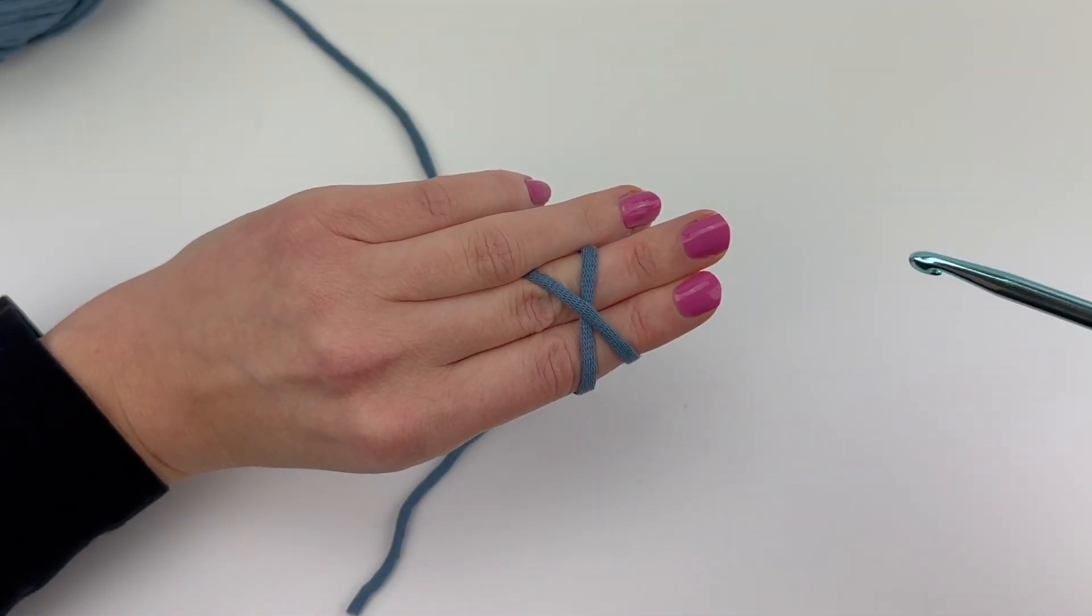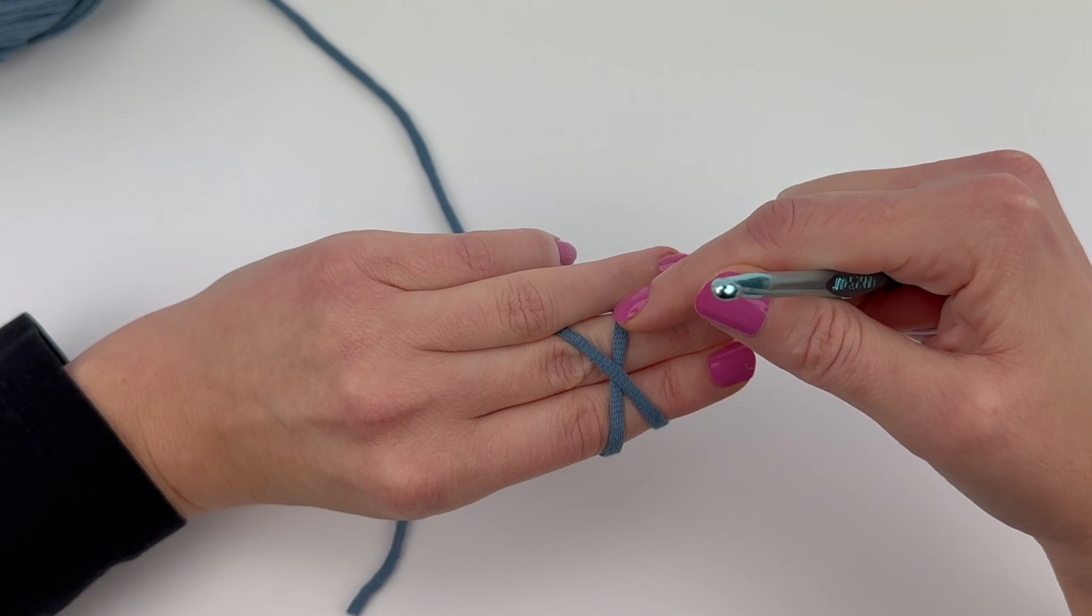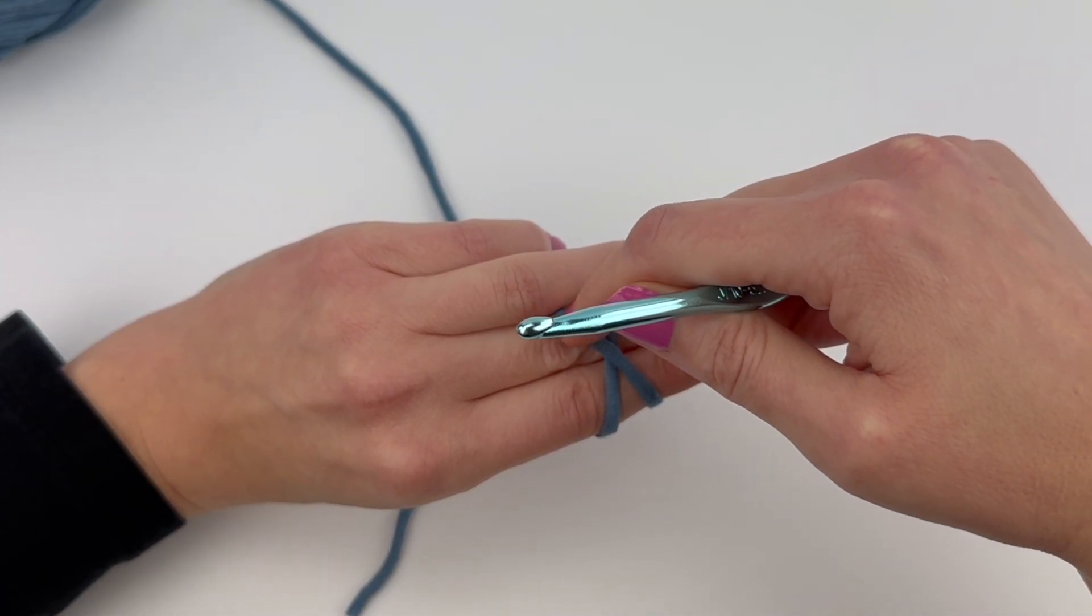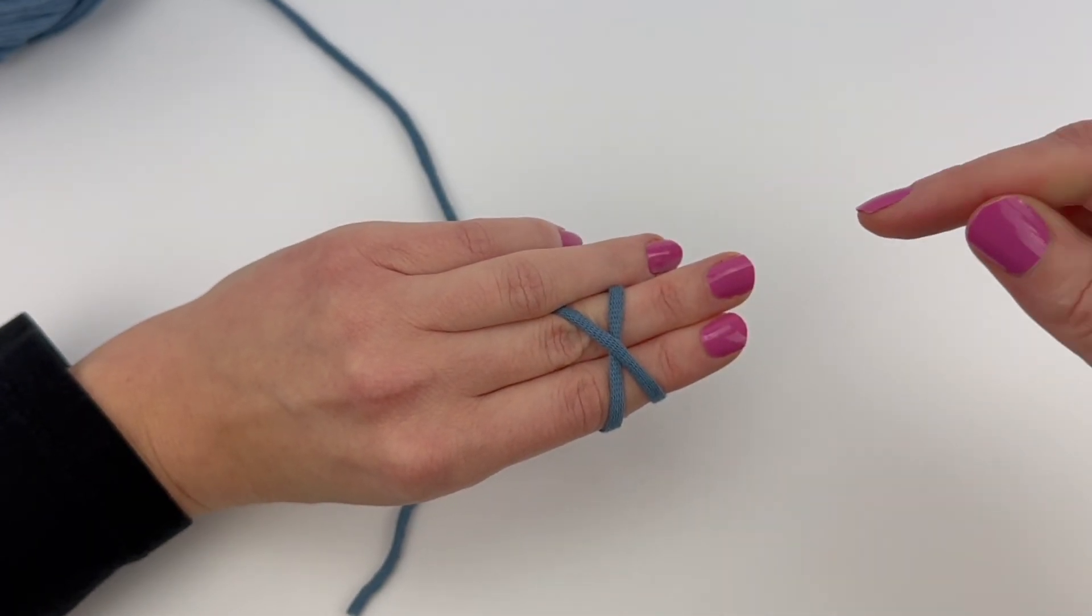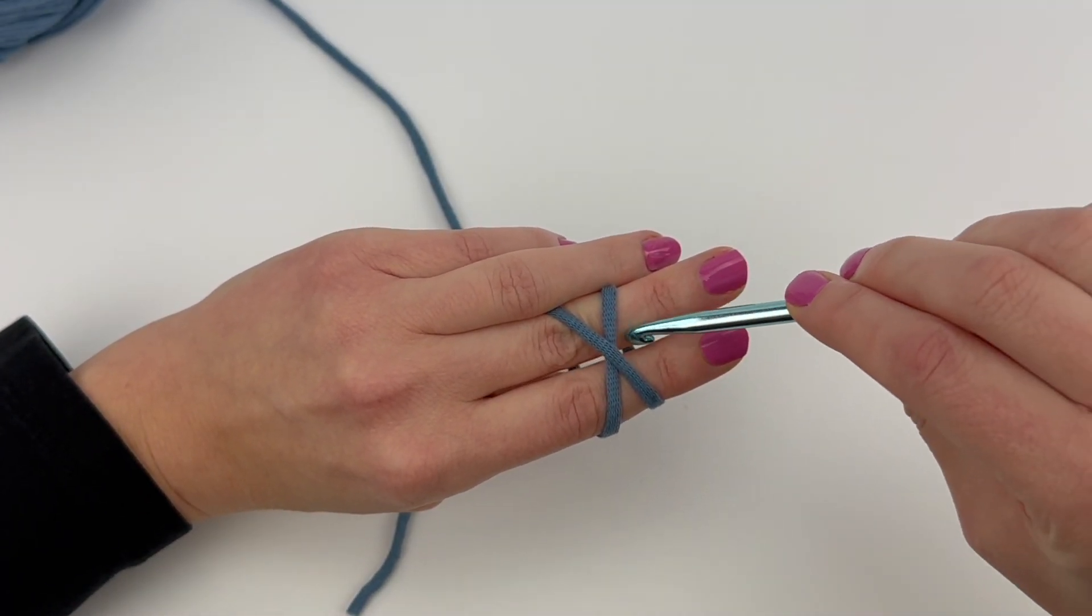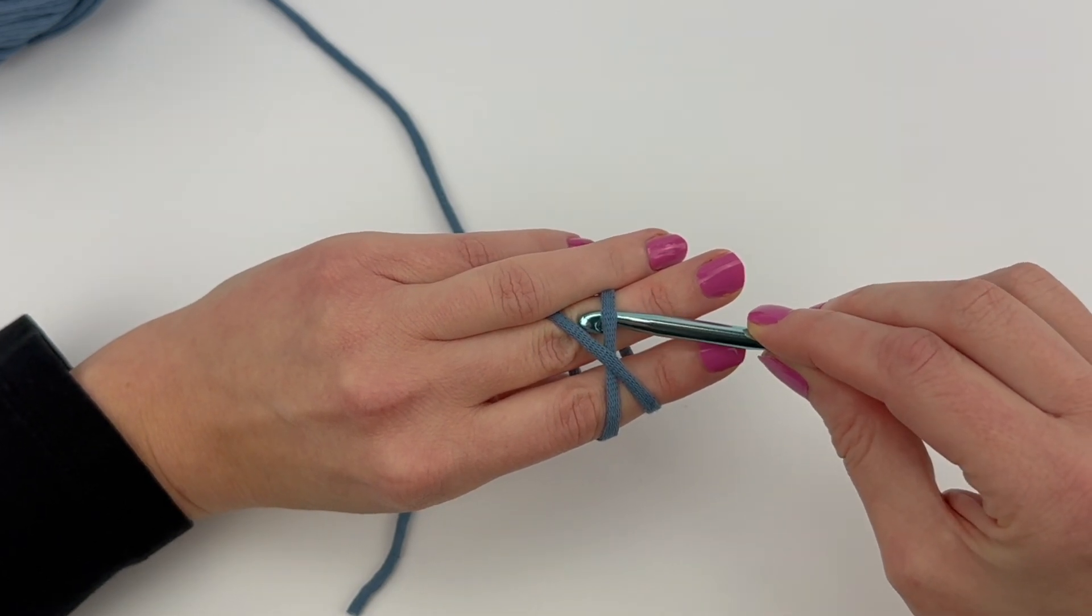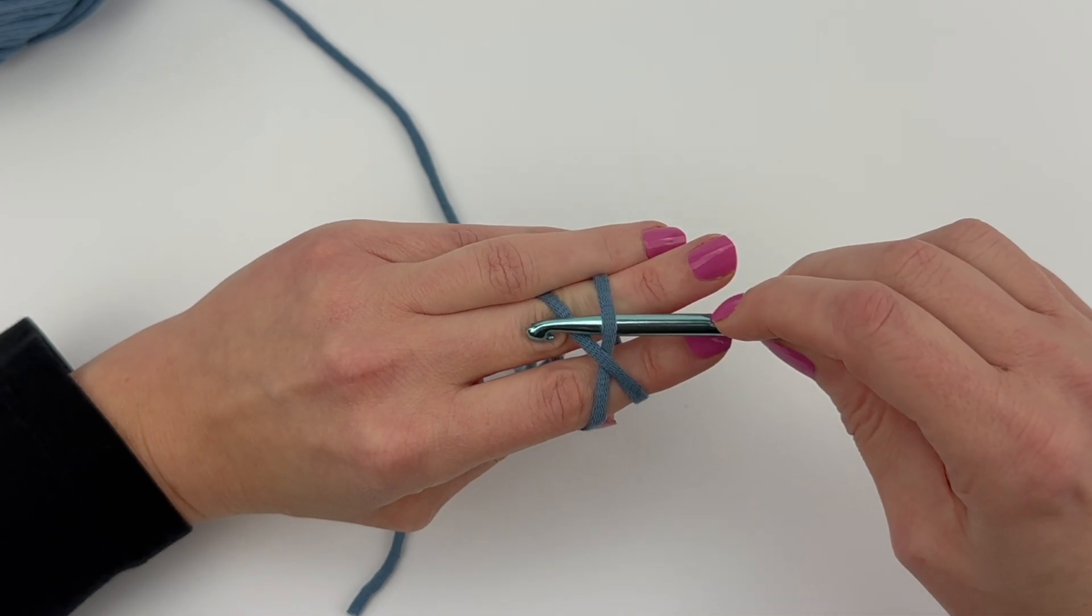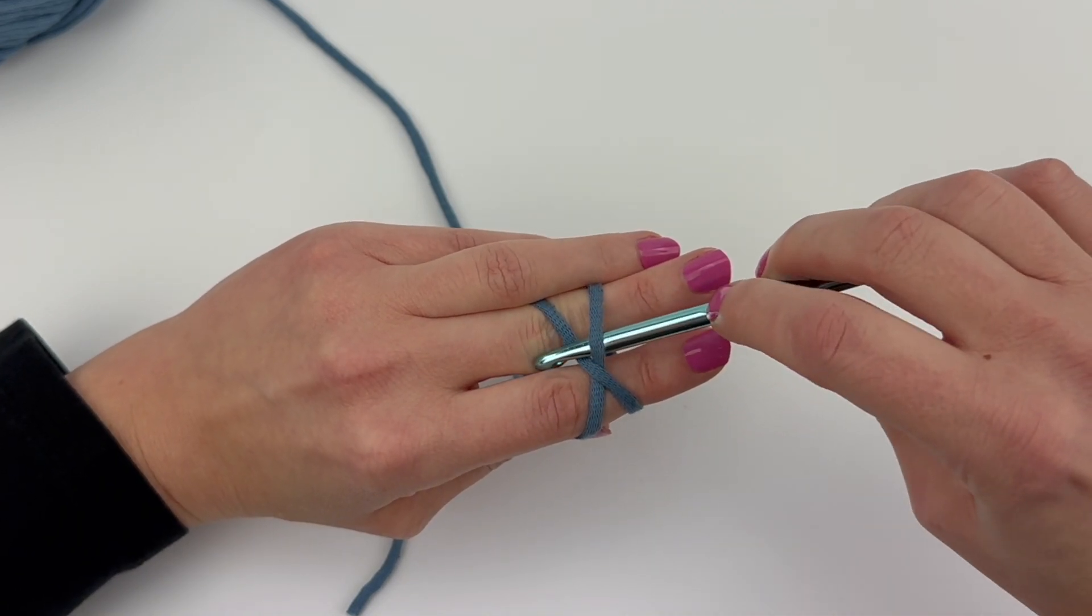Now you get your hook and we're going to go under the top right part of the X and hook the top left part of the X and bring it under.